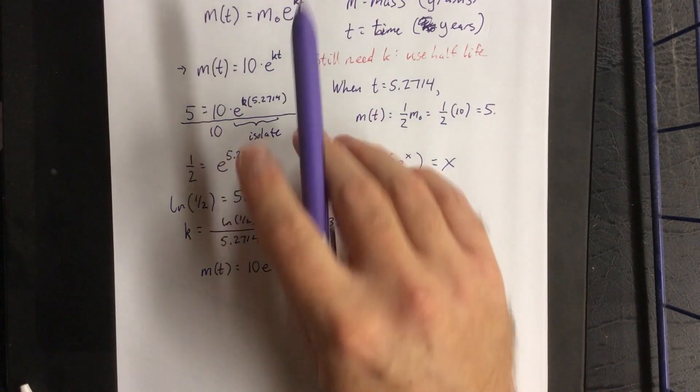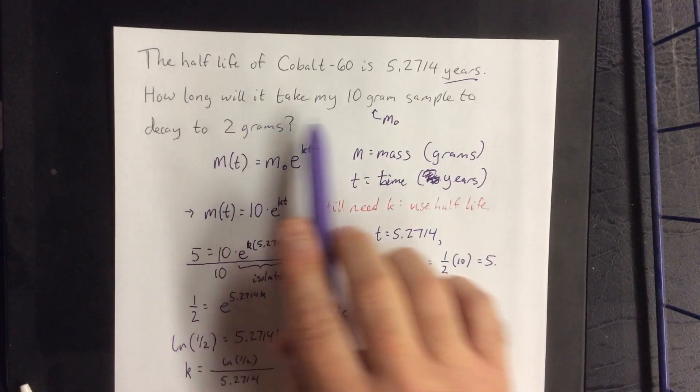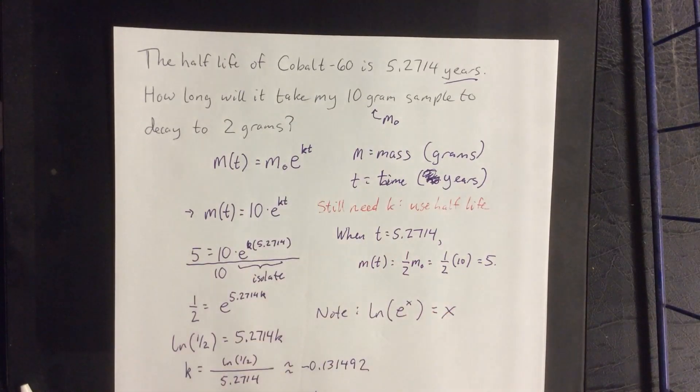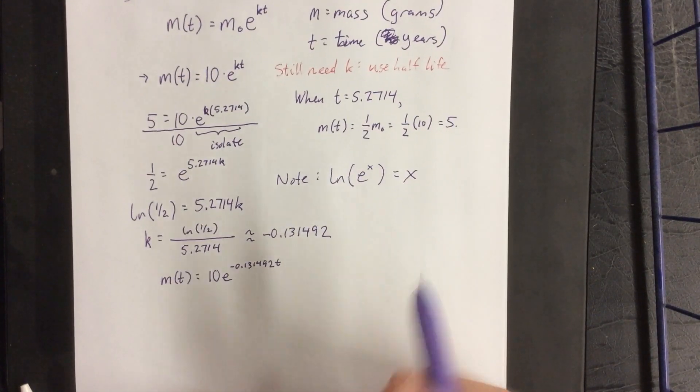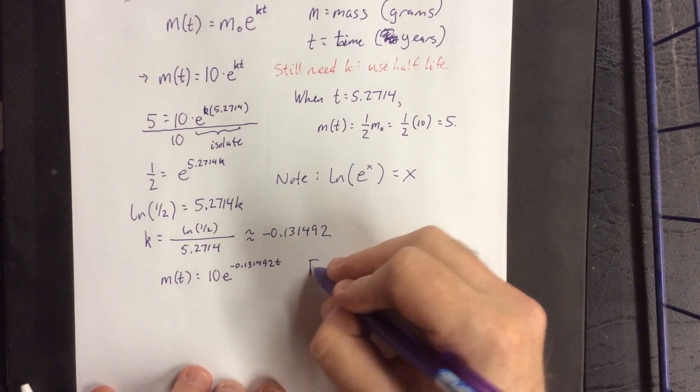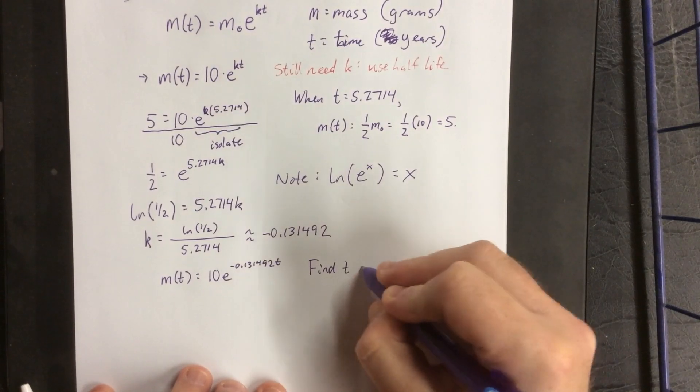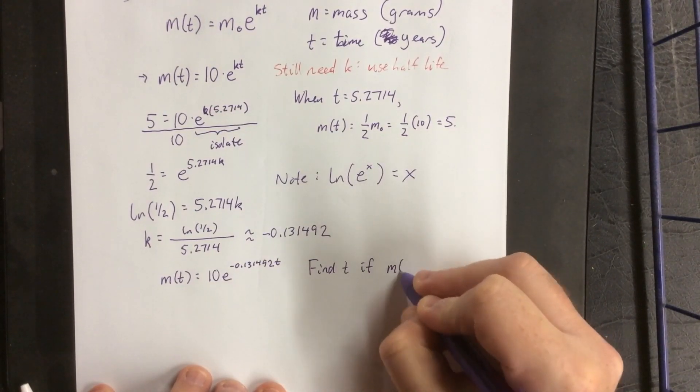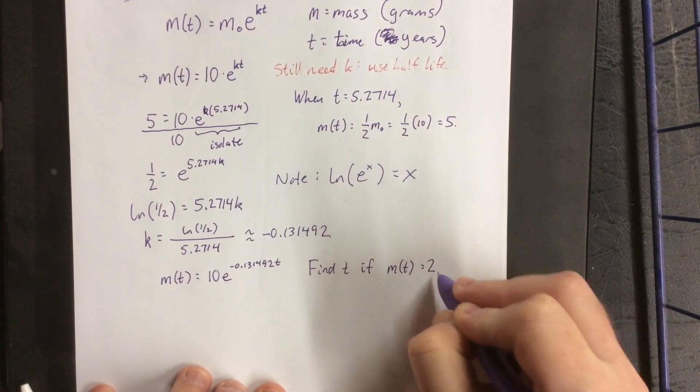Now the original problem said, how long will it take my 10 gram sample to decay to 2 grams? Well, we're posing the question, find t if your mass is equal to 2.